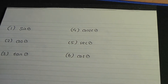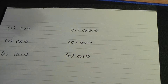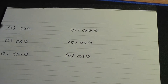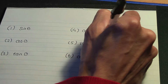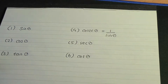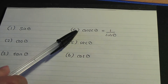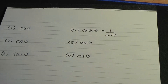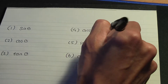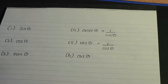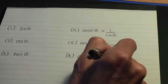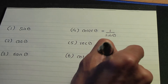Now, these three that I've numbered four, five, and six, these are related to one, two, and three in the following way. Firstly, cosec theta is one over sine theta. So, we would say that cosec is the reciprocal of sine — one over sine gives you cosec. And sec theta is one divided by cos theta. And finally, cot theta is one over tan theta.